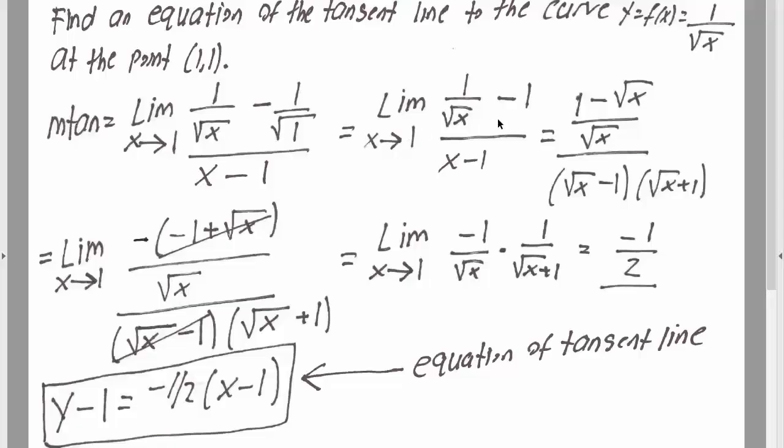This will equal this, and we want to get a common denominator for this. So we'll say square root of x, and doing so we'll get this. And next up we need to factor x minus 1 to get something similar to this, so we can cancel it out later.